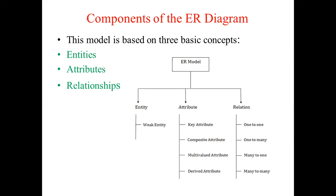For the formation of the database design, we take inputs from different clients, stakeholders, and consider what are their inputs, what outputs they require, and what environment they require. All the components of the database are differentiated based on three categories: first is entity, second is attributes, and third is the relationship. The entity may be a strong entity or a weak entity. An attribute may be simple, composite, multi-valued, or derived. And when more than one entity is related with each other, that is called a relationship — which may be one-to-one, one-to-many, many-to-one, or many-to-many.